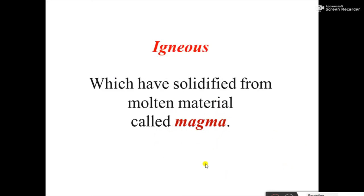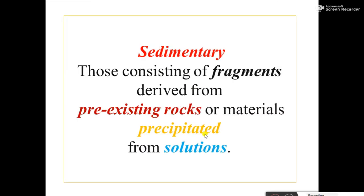Magma, when solidified or crystallized or cooled, forms igneous rock. As an introduction: igneous rock is a rock that is solidified or crystallized from a molten material called magma.